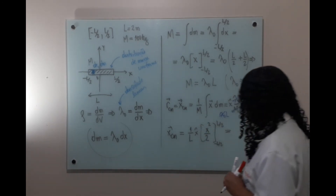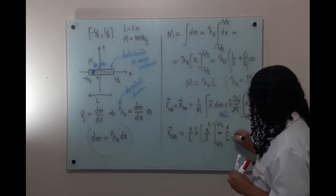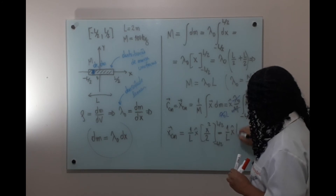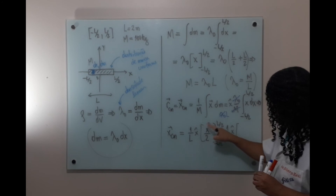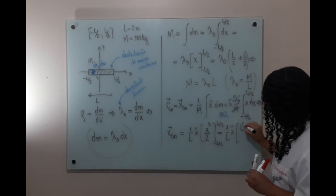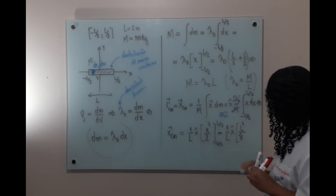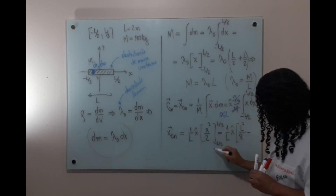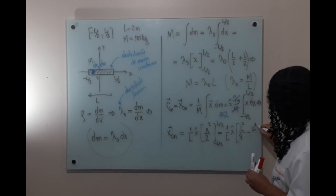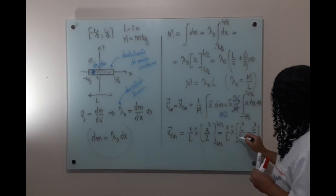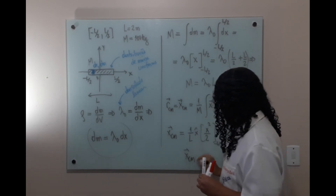Isso vai dar 1/L vezes [(L/2)²/2 - (-L/2)²/2]. O primeiro termo dá L²/8, menos esse termo que ao quadrado também fica positivo, dando o mesmo fator. Esse termo menos esse dá 0. Portanto, nossa posição do centro de massa é igual a 0.